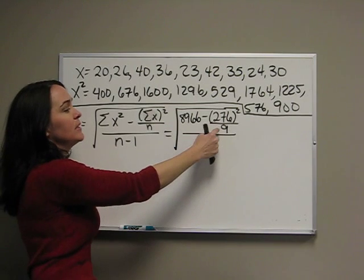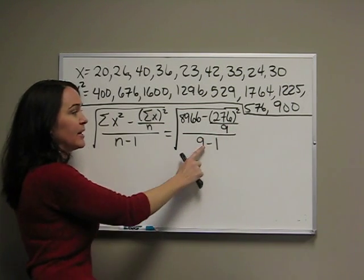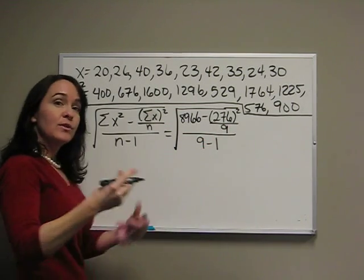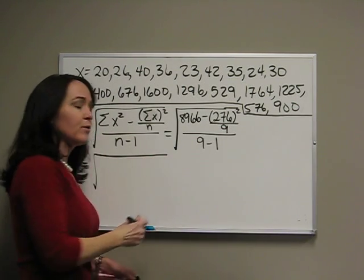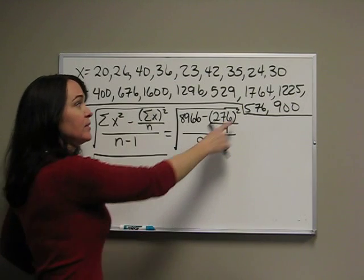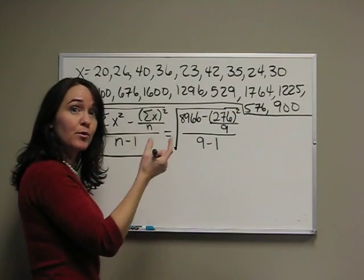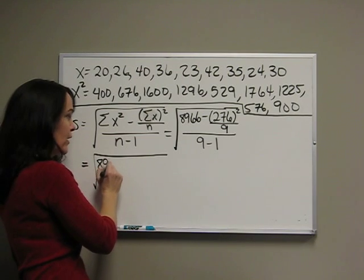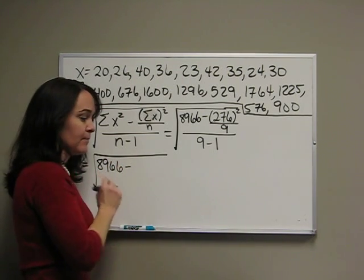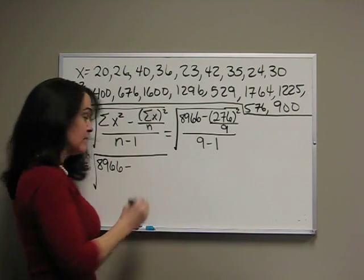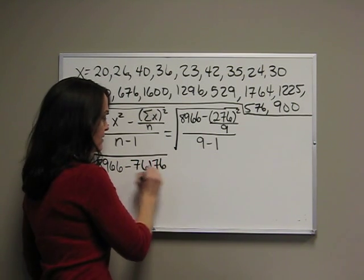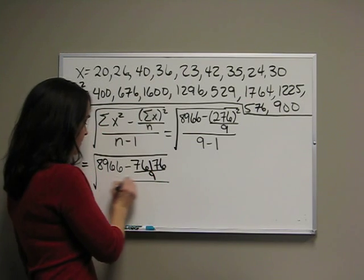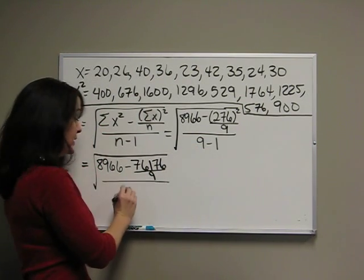Then we square it, divide by 9, and all divide by 9 minus 1. So, now we're ready to simplify this. Order of operations says to use the square, get rid of the exponentials in parentheses first. So, we need to square 276. When we square 276, we get 76,176 divided by 9, and I'm going to go ahead and say 9 minus 1 is 8.